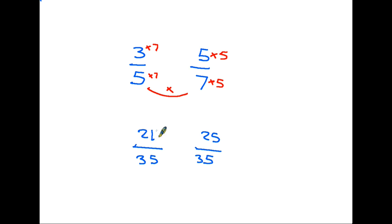Because on this side on the left we have 21 over 35. On the right we have 25 over 35. Therefore the right hand side is the largest.